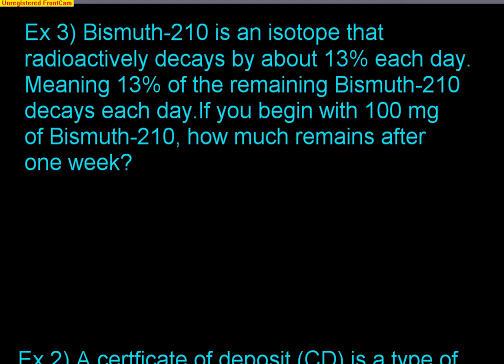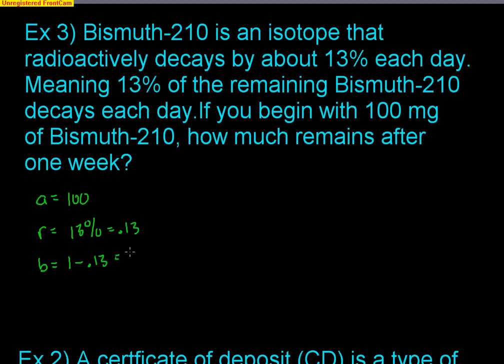Now let's look at a decay problem. Bismuth-210 is an isotope that radioactively decays by about 13% each day — meaning 13% of the remaining bismuth-210 decays each day. If you begin with 100 milligrams, how much remains after one week? A is 100 milligrams. Since I'm decaying, the growth factor is 1 minus 0.13, which equals 0.87. That means I'm retaining 87% of what I have each day.